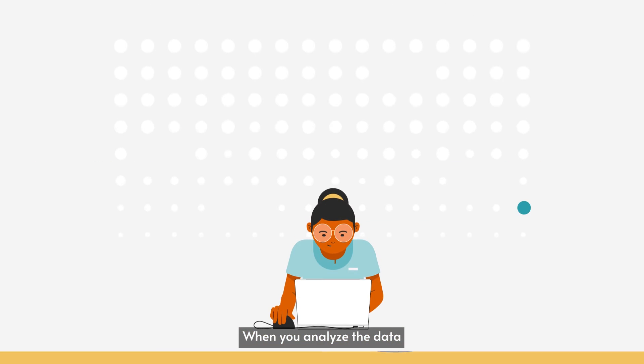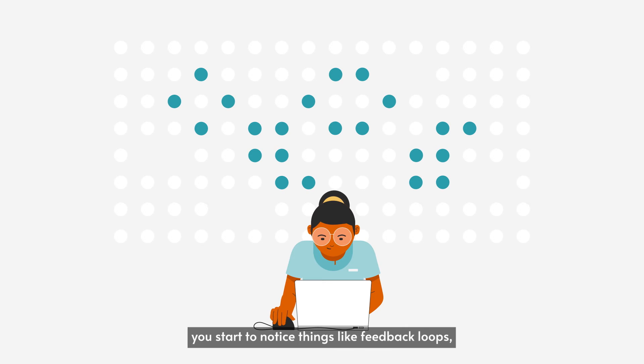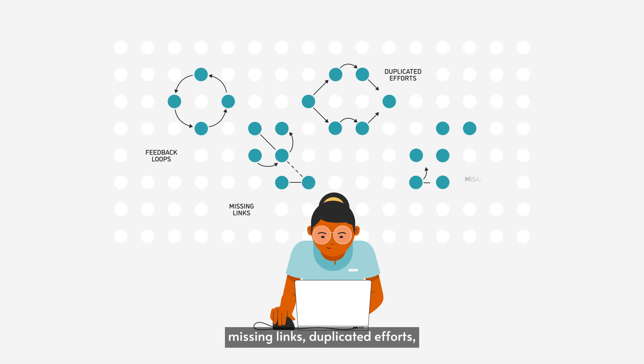When you analyze the data and visualize the many connections, you start to notice things like feedback loops, missing links, duplicated efforts, and misaligned incentives.